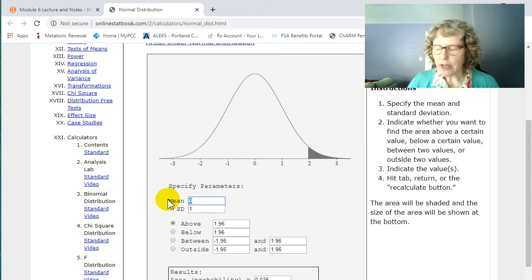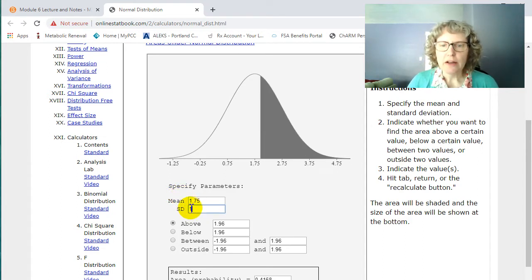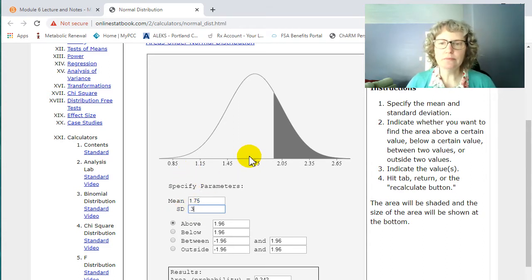So I'm going to type in from the children's cholesterol problem in the notes. So our mean was 1.75 and our standard deviation was 0.3 or 0.30. And look at that, puts the mean in the middle and it counts by 0.3 on each side. So that's perfect.